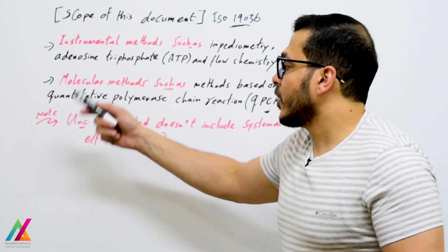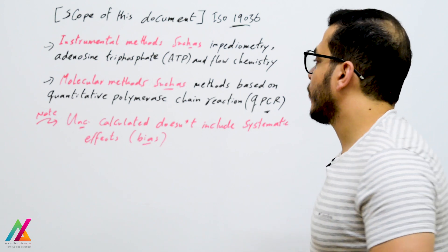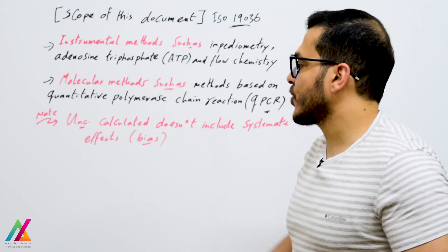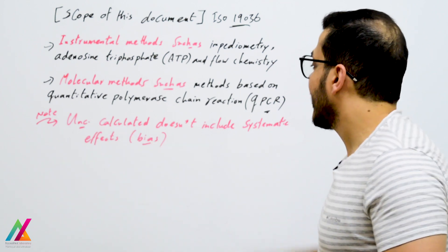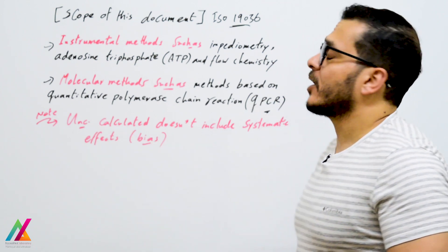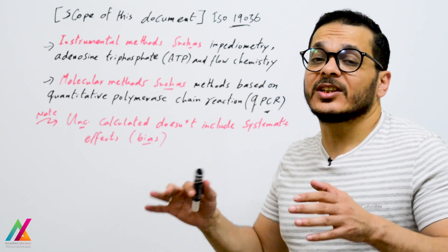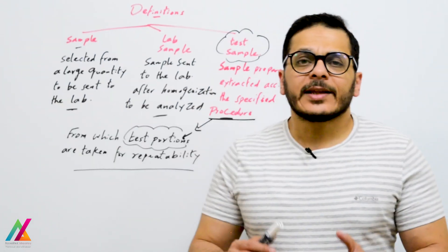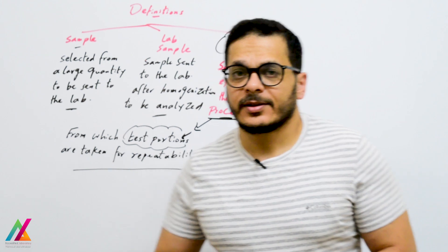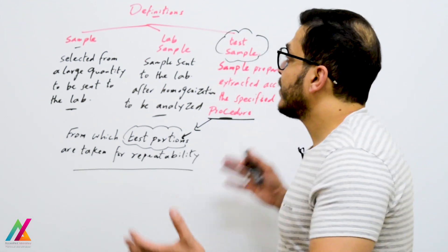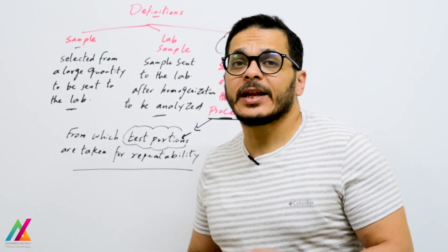You should know, as explained in previous lectures, that the uncertainty calculated here does not include systematic effects — uncertainty due to bias is not included. Now I will give you some definitions, starting with the difference between sample, lab sample, and test sample.